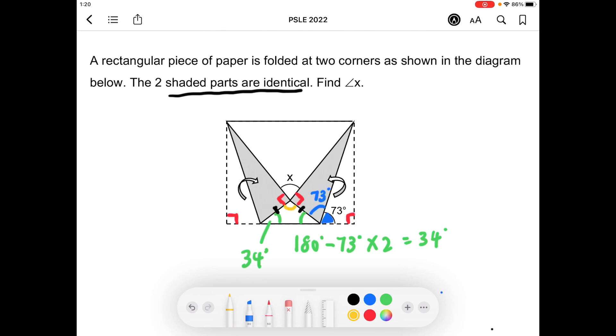yellow here using angles in a triangle. We take 180 degrees take away 34 degrees times two and you will get 112 degrees. Now we can find angle x by using angles at a point. Take 360 degrees take away two sets of 90 degrees and 112 degrees to get 68 degrees as the answer for angle x.